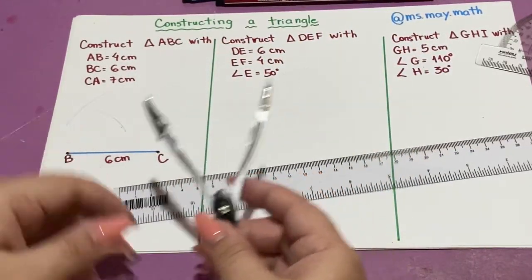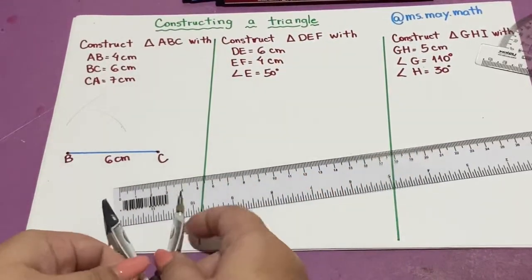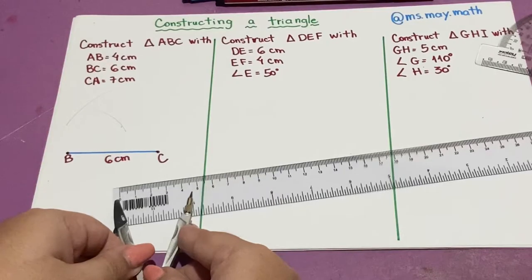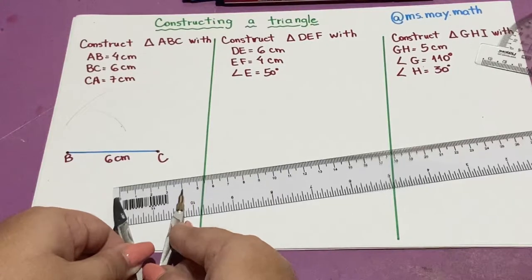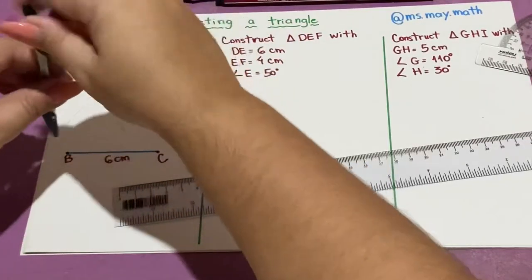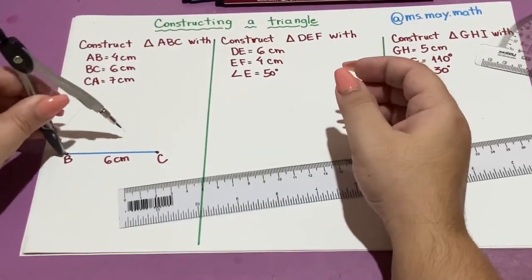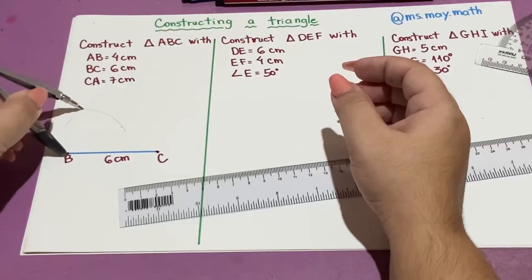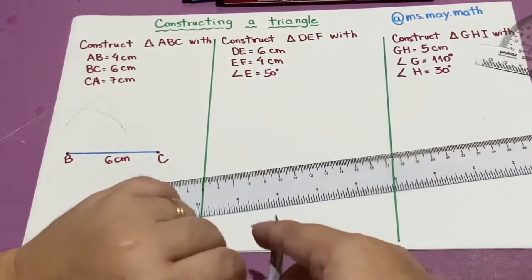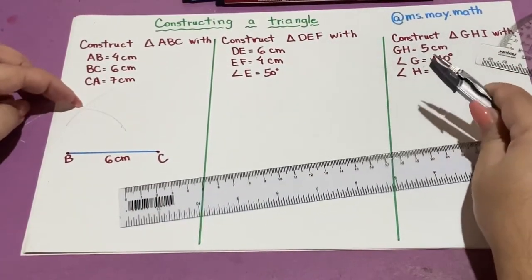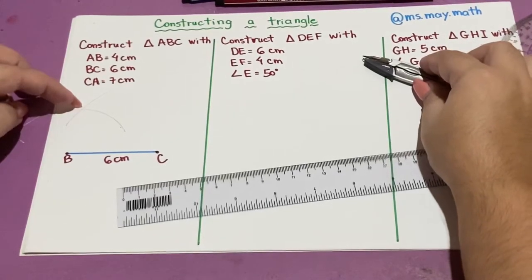This arc is too small, so I'm going to do it again. 4 centimeters. Fixed point on B. And do the arc. This point, when they intersect, will be my point A.